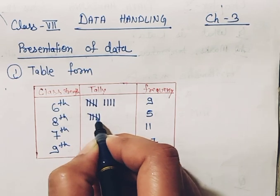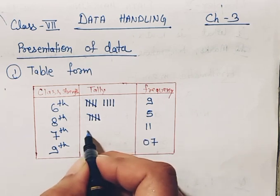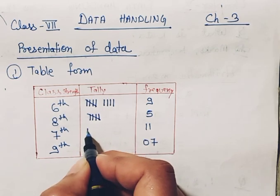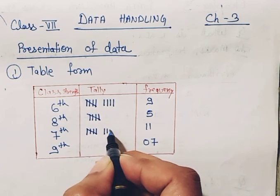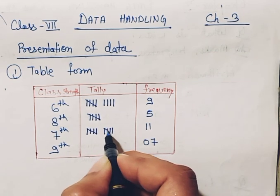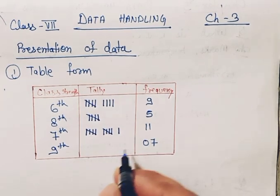Coming to the next, for class 7th it is 11, so 1, 2, 3, 4, 5, 6, 7, 8, 9, 10, and 11.